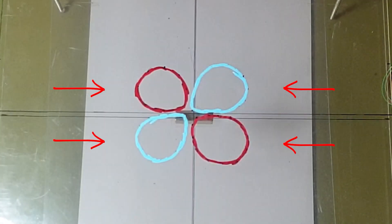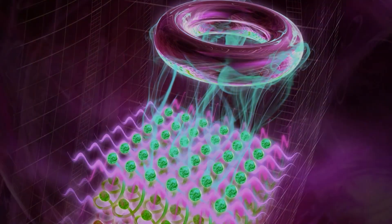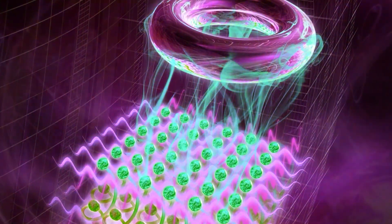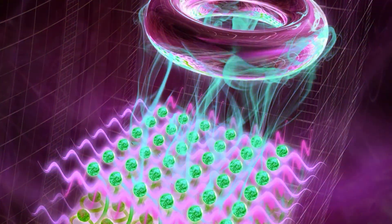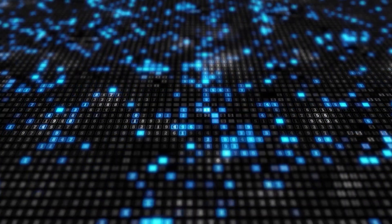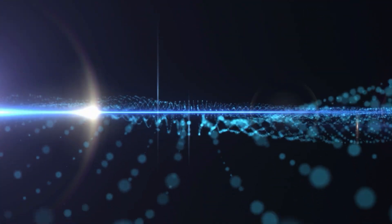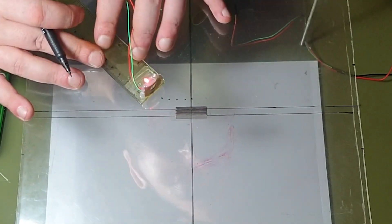This is an entanglement of shapes, a connection between the geometries of the magnetic field itself. In quantum mechanics, a similar concept already exists. It's called topological entanglement. It describes systems where two regions of space aren't connected by information exchange, but by a global coherence of shape.